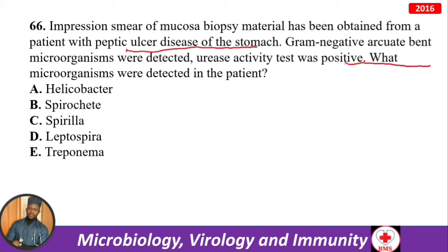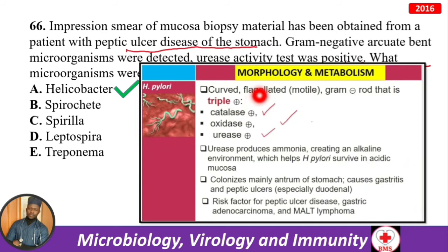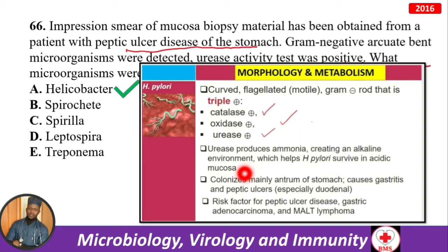H. pylori is a curved, flagellated, gram-negative rod — triple positive: catalase-positive, oxidase-positive, urease-positive. Urease produces ammonia, creating an alkaline environment that helps H. pylori survive in the acidic gastric mucosa. It colonizes mainly the antrum of the stomach causing gastritis and peptic ulcers, and is a risk factor for peptic ulcer disease, gastric adenocarcinoma, and MALT lymphoma.